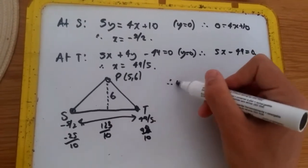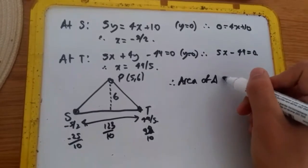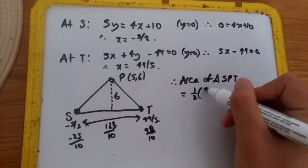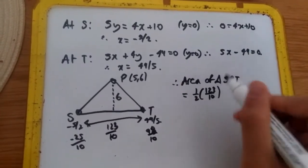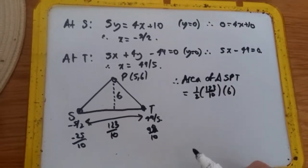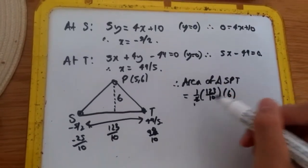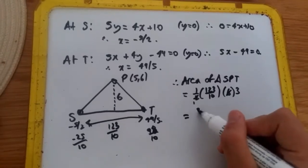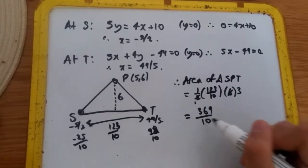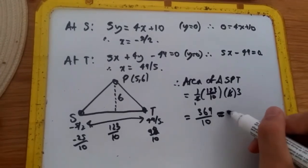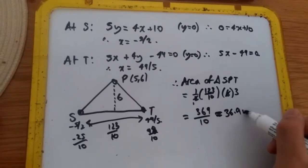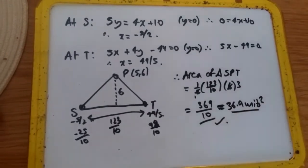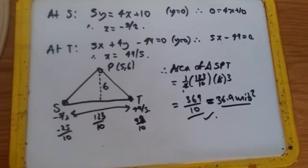Therefore, we can say that the area of triangle SPT equals half times base times height. So half times the base, which is 123/10 times 6. Cross-simplifying, 2 gives us 1 and 6 gives us 3. So now it's just 3 times 123. It should give us 369/10, which is exactly 36.9 units squared. I think this is fine. You can leave it as 369/10. But anyway, that's it guys. Hope this helps. And I shall see you in the next question. Ciao.